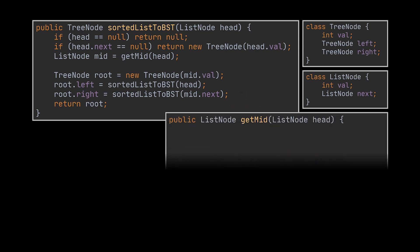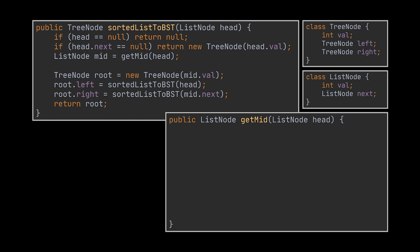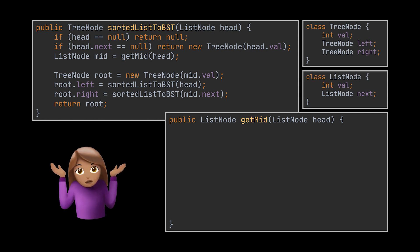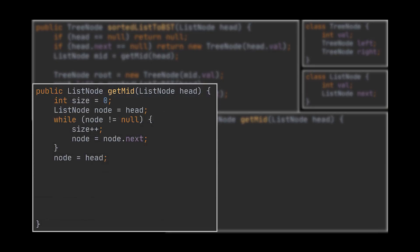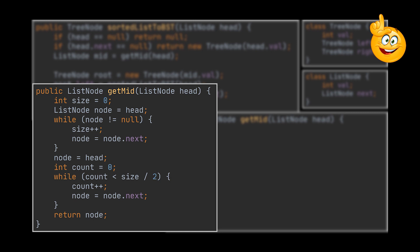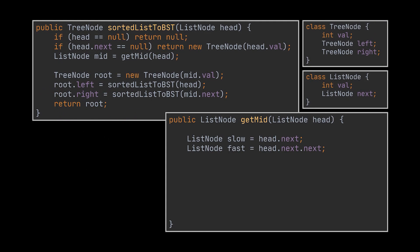The real difficult part lies in the implementation of the getMid method. To retrieve the middle element of an array we just calculate the index — but how do we do that given a linked list? You could traverse the list once to count the number of elements, then divide by 2 to retrieve the middle element. Or, using the two pointers technique, you can create two pointers: a slow and a fast one. The slow pointer hops one node at a time and the fast hops two nodes at a time. By the time the fast pointer reaches the last element, the slow pointer will be located exactly at the middle element.